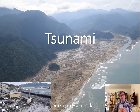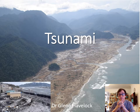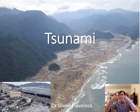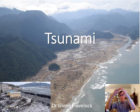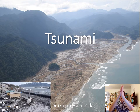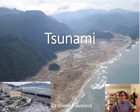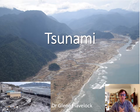It's these subduction zone earthquakes that often cause or create tsunami from the displacement of the seabed upwards, and that ripple pushes the water body up, then it ripples outwards. Once it hits shallow water, it slows down, piles up, and you get huge waves.